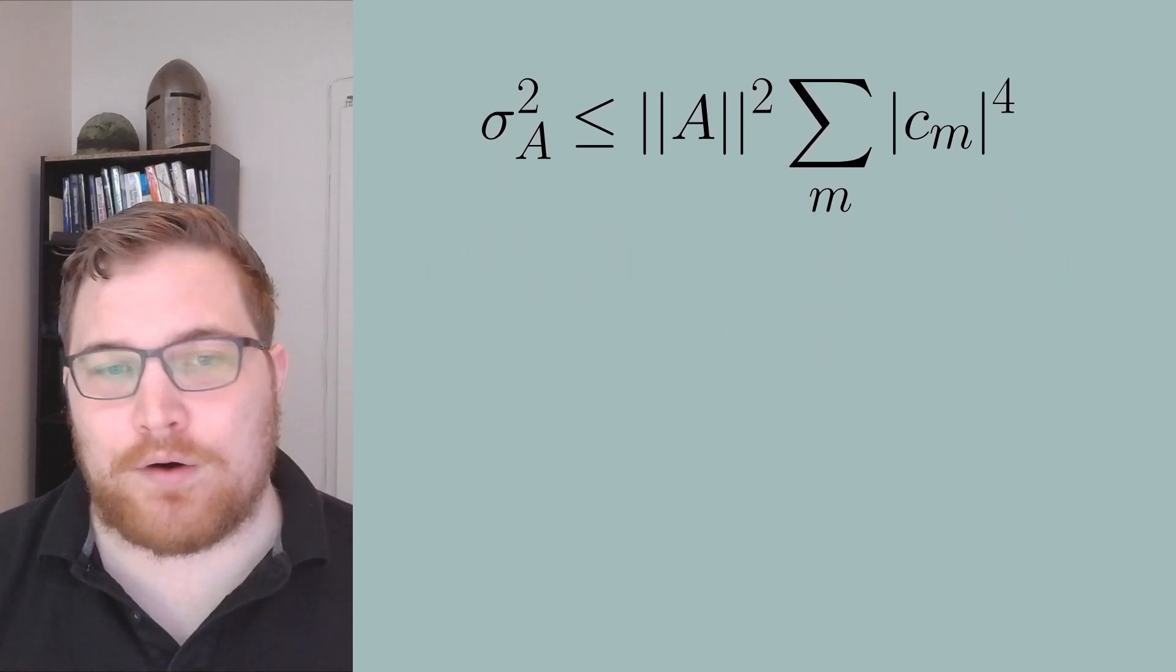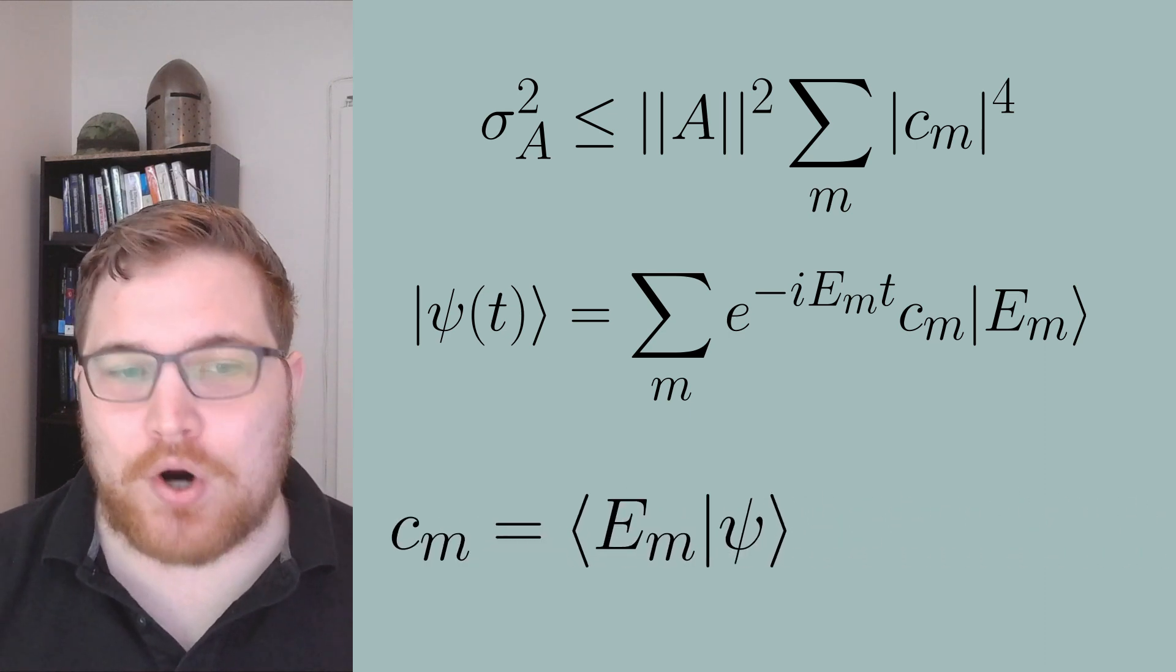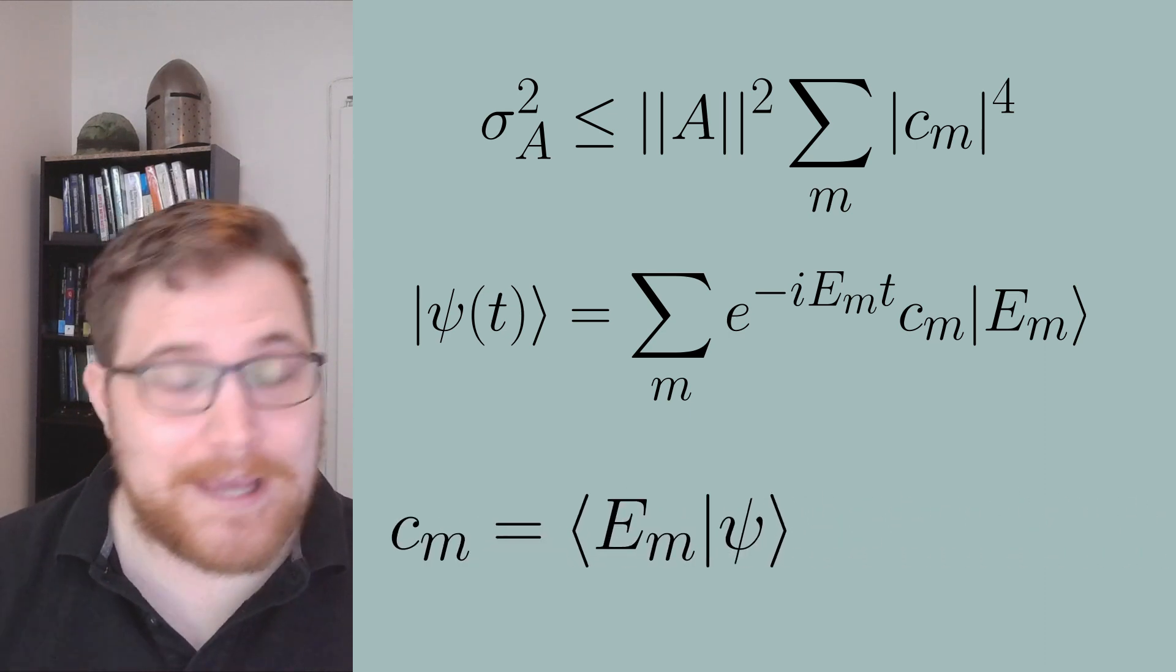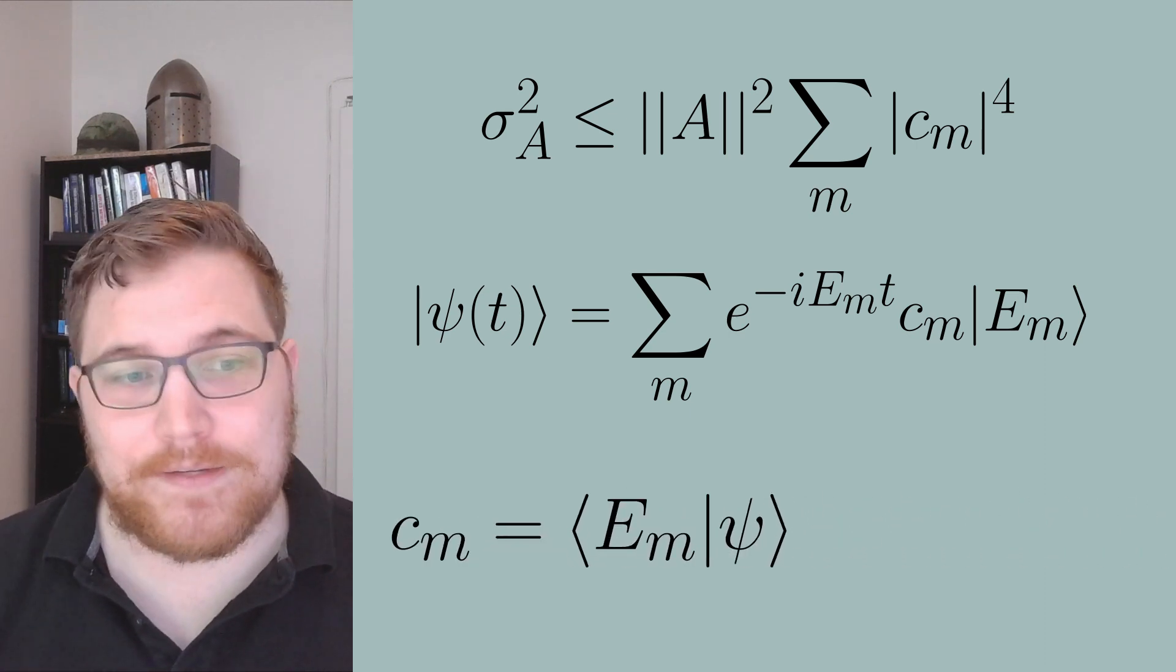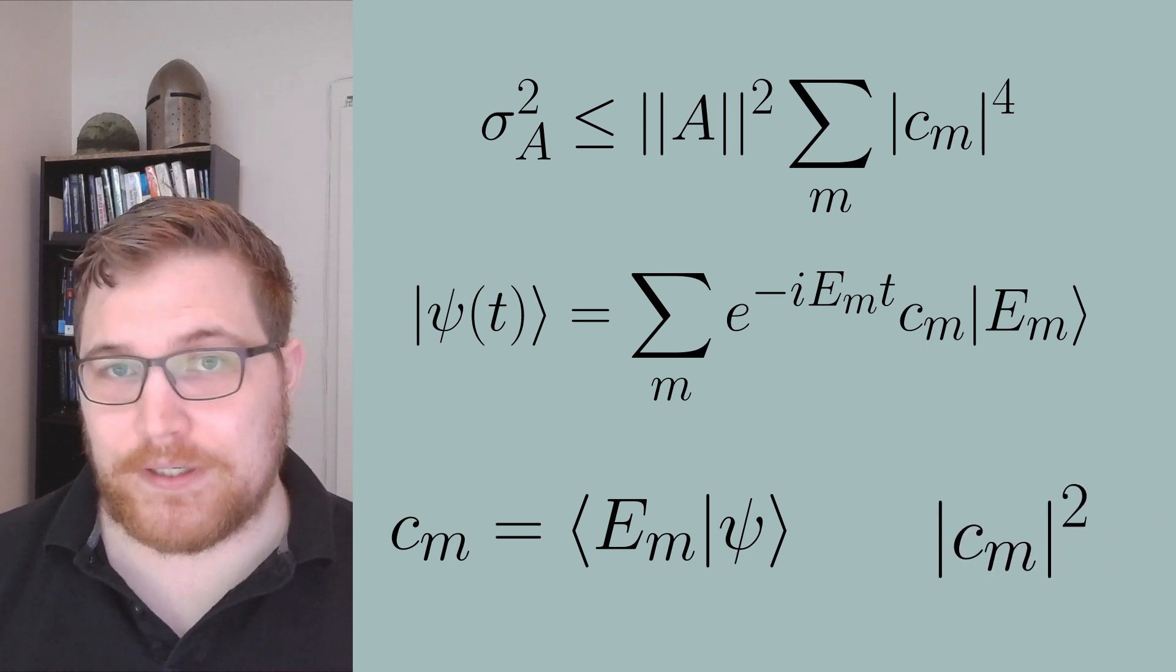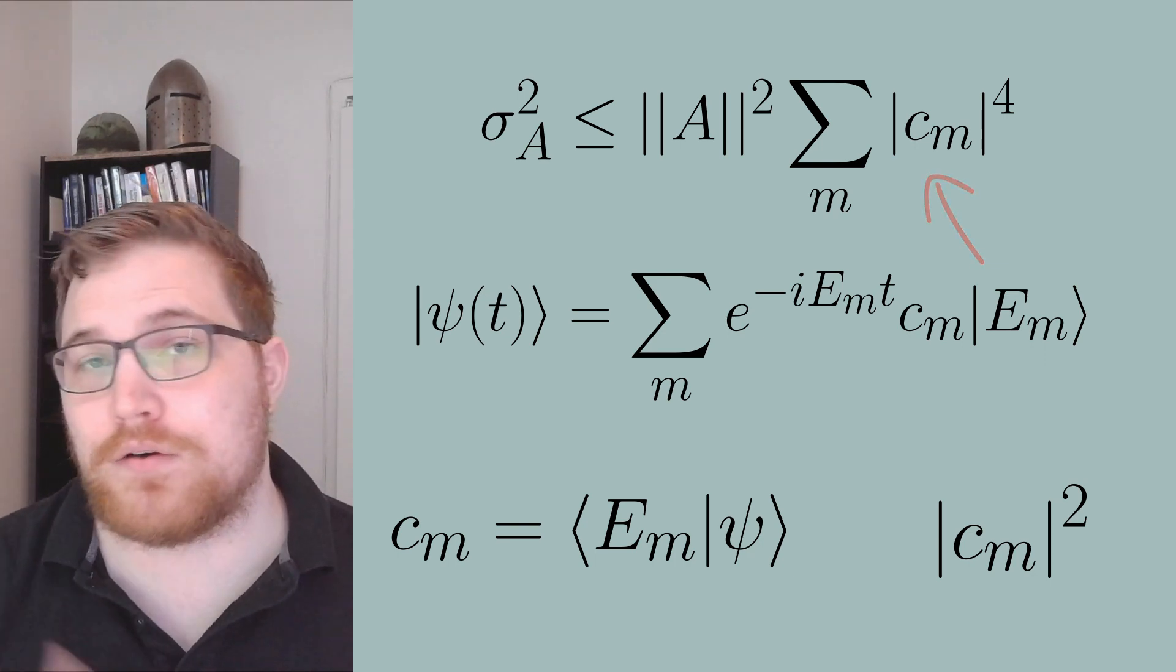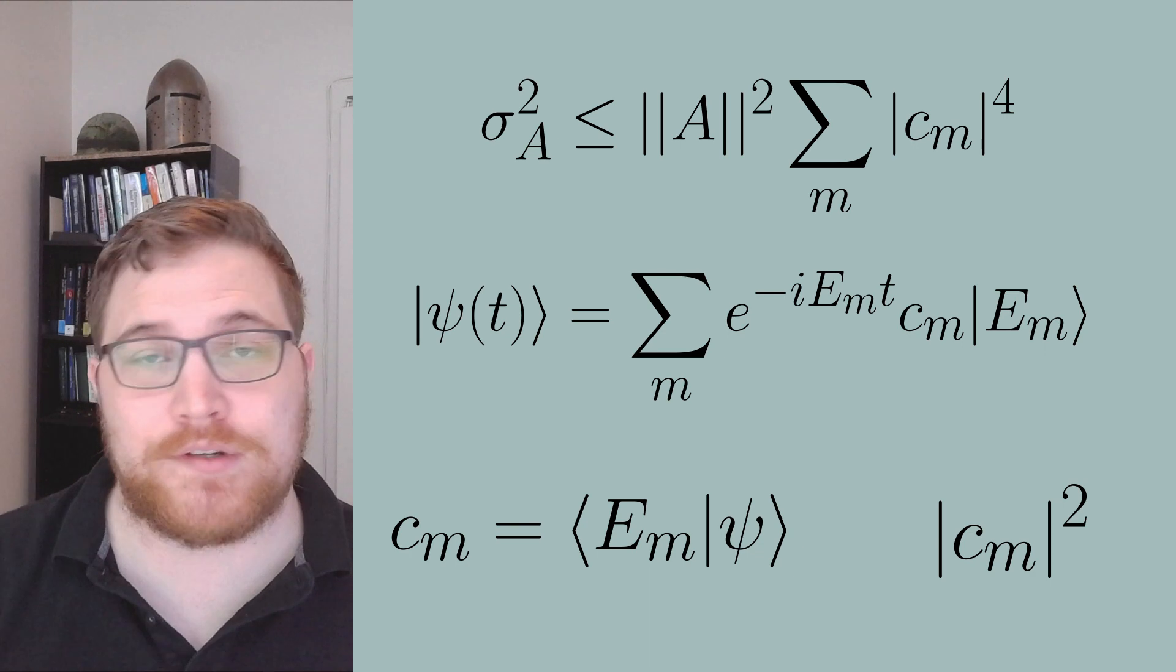Now to understand the sum. Well, bringing back our definition of the state, the c_m terms are our probability amplitudes for our eigenstates, and the c_m modulo squared would be the probabilities. So in the summation, we see that we have the squares of the probabilities all summed up.